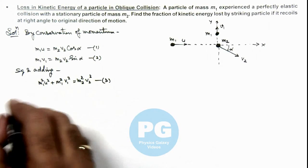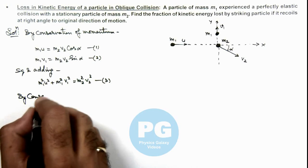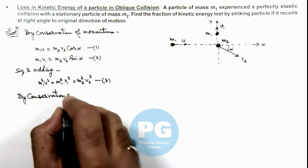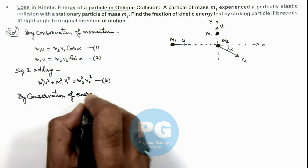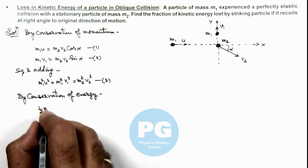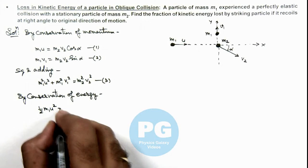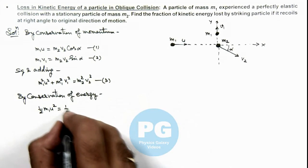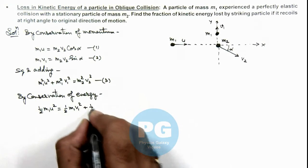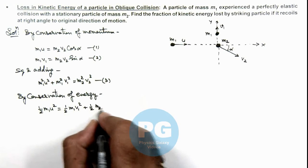For elastic collision we can write, by conservation of energy: half*m1*u² was the initial energy, which must be equal to the final energy, which is half*m1*v1² plus half*m2*v2².